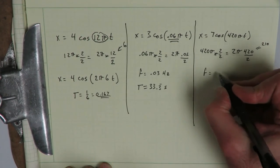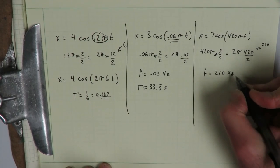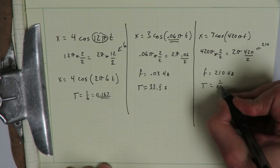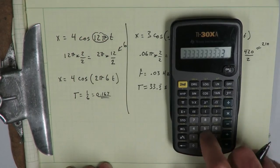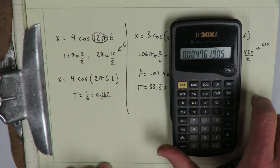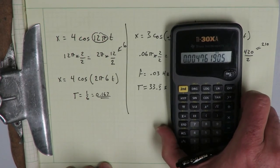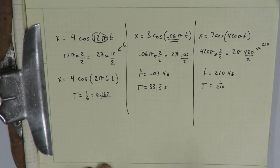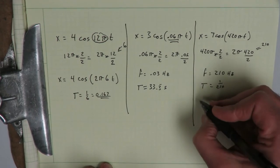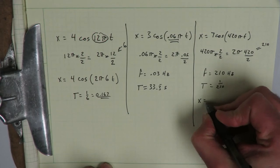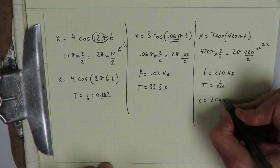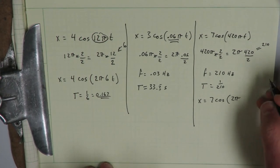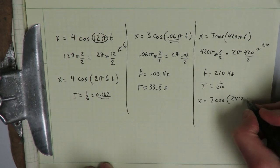So that means that the frequency equals 210 hertz. And if we want to have the period, it's going to be 1 divided by 210, which is 0.00476. That's not a very convenient number, but that's what it is. Okay, so then the final form of the equation should be x is equal to 7 cosine 2 pi times 210t.